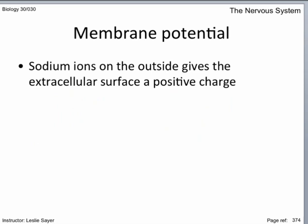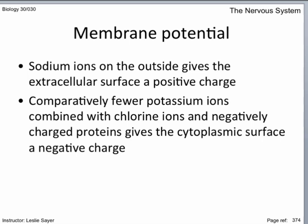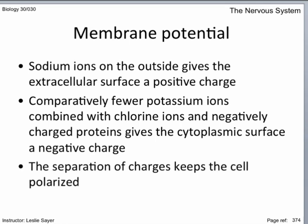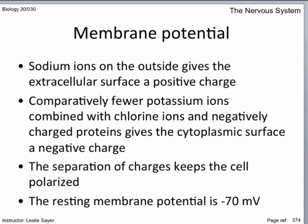In review: sodium ions on the outside give the extracellular surface a positive charge. The comparatively fewer potassium ions combined with chlorine ions and negatively charged proteins give the cytoplasmic surface a negative charge. Separation of charge keeps the cell polarized — in other words, it carries a voltage. A resting membrane, one that isn't carrying a stimulus, is negative 70 millivolts. The membrane potential provides the energy for the generation of a nerve impulse in response to an appropriate stimulus.